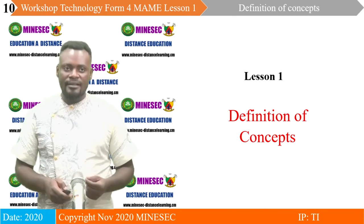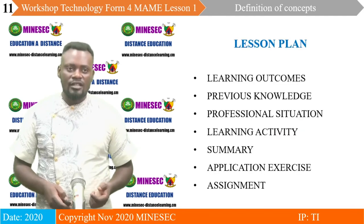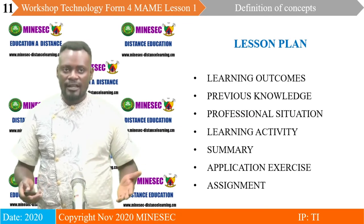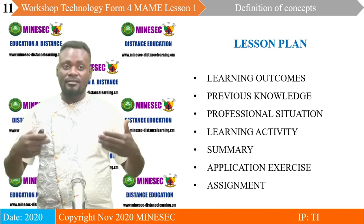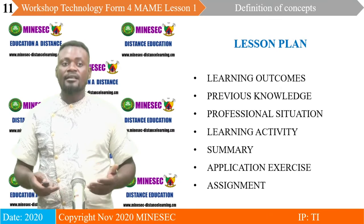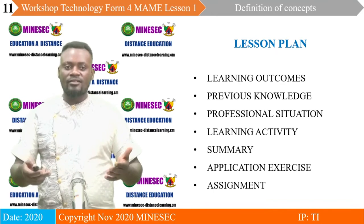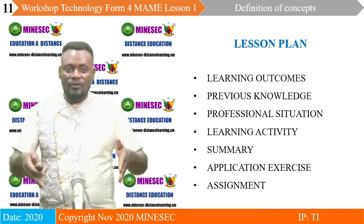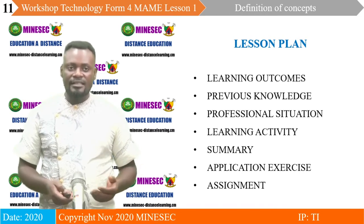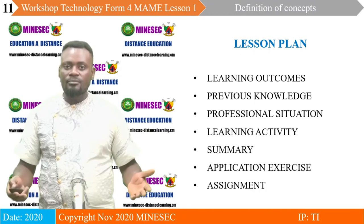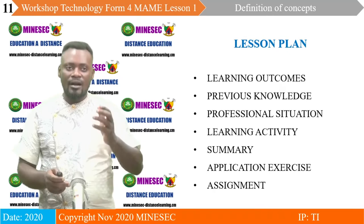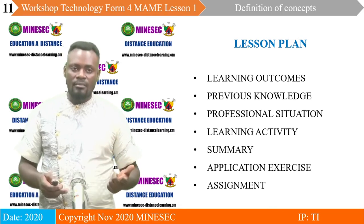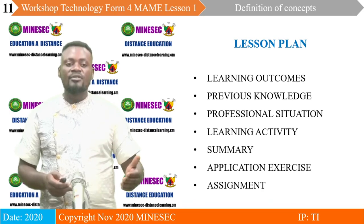Today, lesson number one is the definition of these concepts. We have to follow this learning plan: beginning with the learning outcomes — what is expected of each of you, the learners — followed by the previous knowledge, what you must have encountered before. Then the professional situation, where we lay hands on activities we encounter. Next is the learning activity, what we are going to be doing along the teaching and learning process. Then we give a summary, possibly an application exercise, and a take-home assignment to keep you busy before our next session.